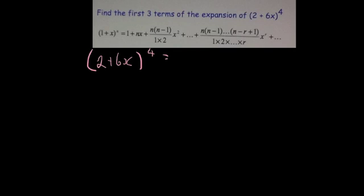So when you take 2 outside, that would give you 2 bracket 1 plus 3x all to the power of 4. So I've just divided this by 2, we're taking 2 out and I kept the power as 4.